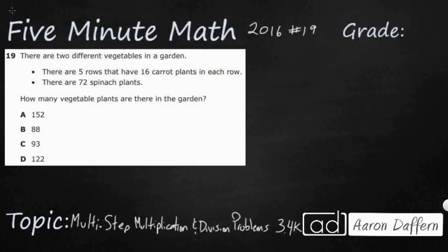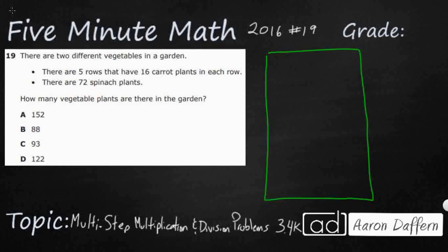So it looks like we have a garden, and I'm just going to draw a big garden over here. It's always good to draw a picture if you can. We've got two different types of vegetables. We have five rows of 16 plants in each row, so this is going to be a multiplication problem because we've got five rows of 16 carrots each. And then they just give us the spinach plants: 72. So how many vegetable plants are there in the garden? This is not meant to be a trick because vegetable includes both the carrots and the spinach, since it says up here there are two different vegetable plants.